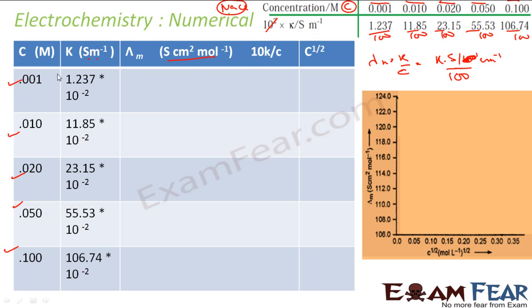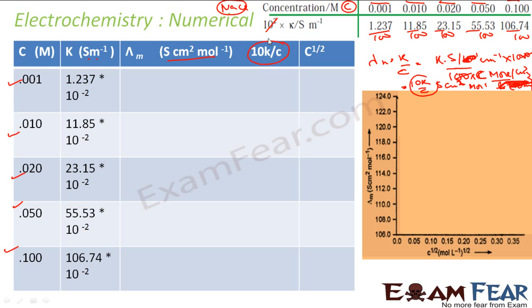Concentration c is in moles per liter, but we need moles per cm³. Since 1 liter = 1000 cm³, dividing by 1000 introduces a factor of 1000 in the denominator. Working through the unit cancellation gives λm = 10k/c, with units of siemens·cm²/mol. That is the formula we will use.